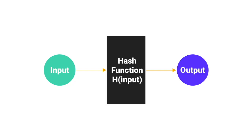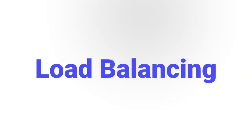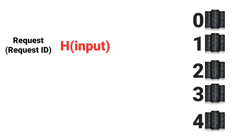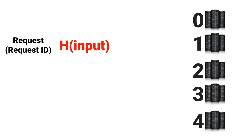Now let's take an example of load balancing with a simple hash function. Suppose we have five servers — 0, 1, 2, 3, and 4 — and we have a request coming from a client. We pass the request ID to a hash function, which gives us a number as output. We then take the remainder of that output divided by the number of servers, which is five. For example, for request ID 1, the hash function outputs 9, and 9 mod 5 gives 4.